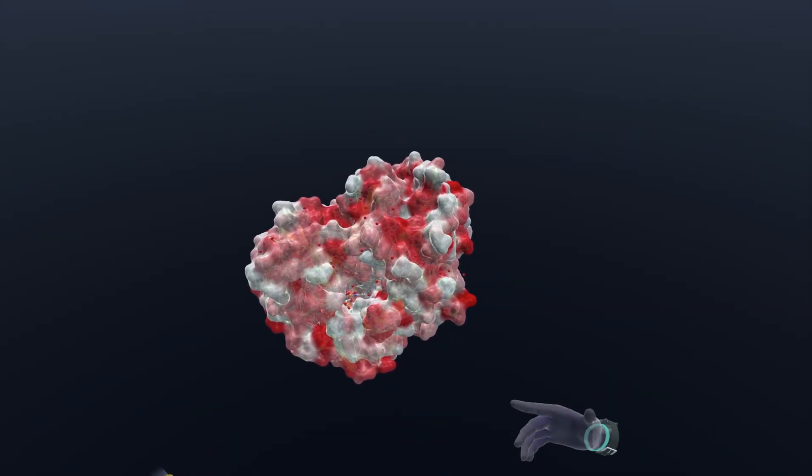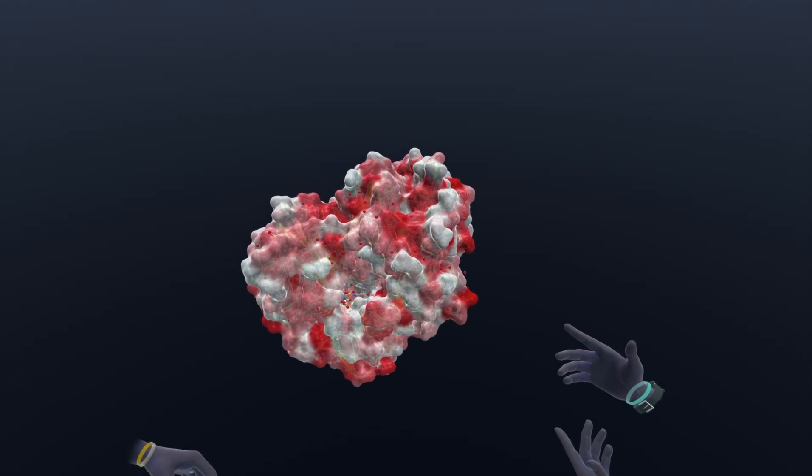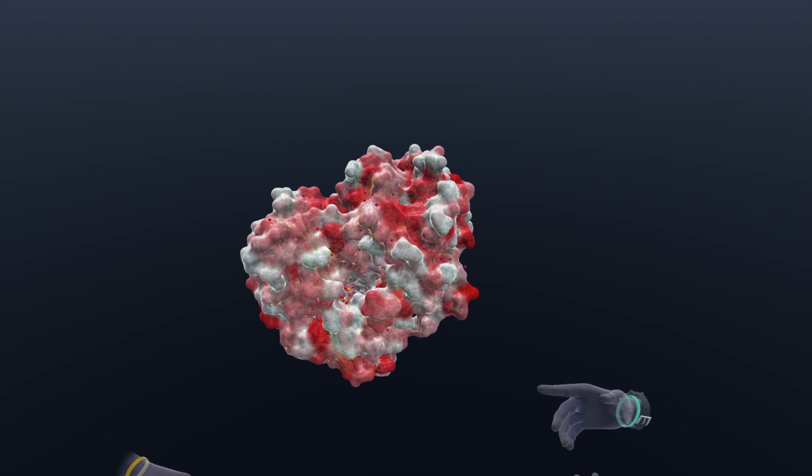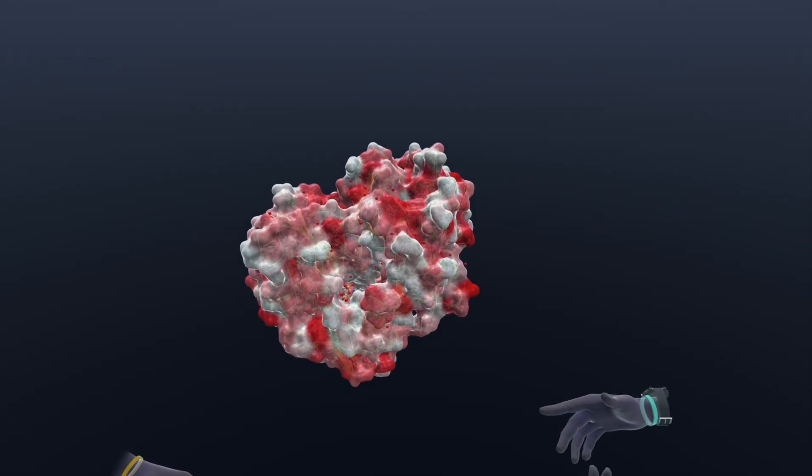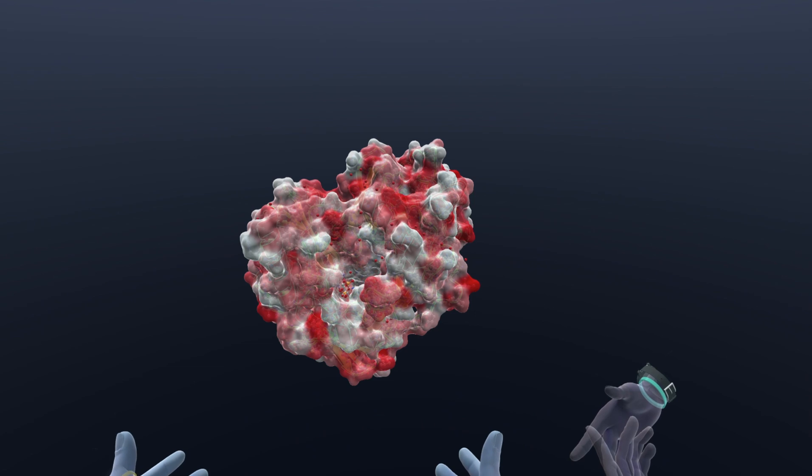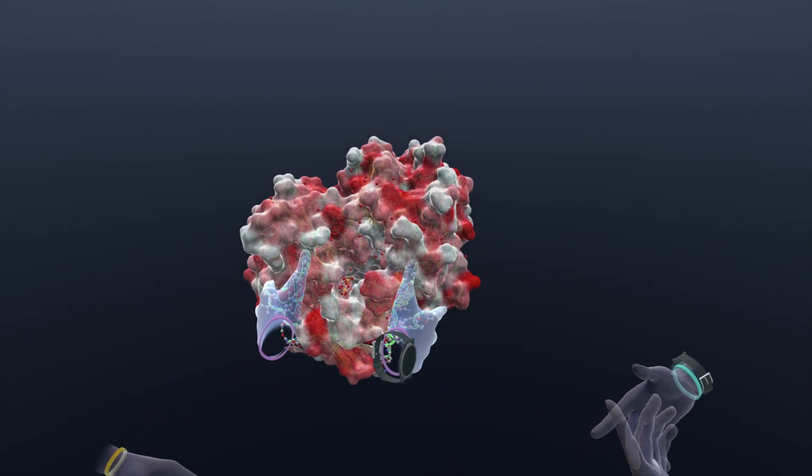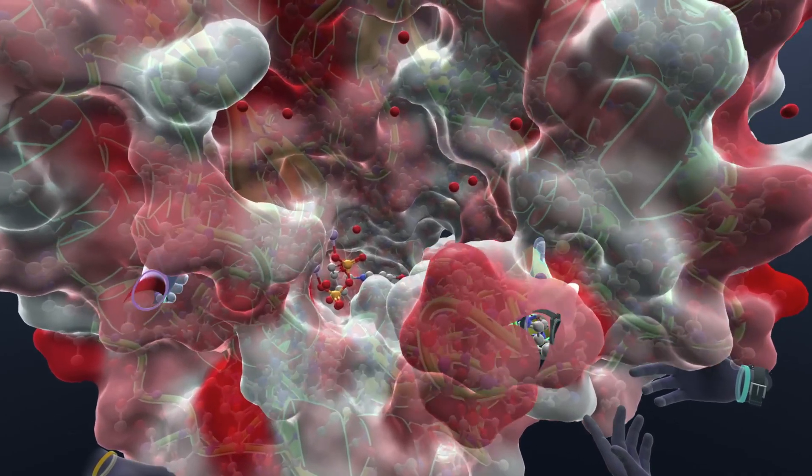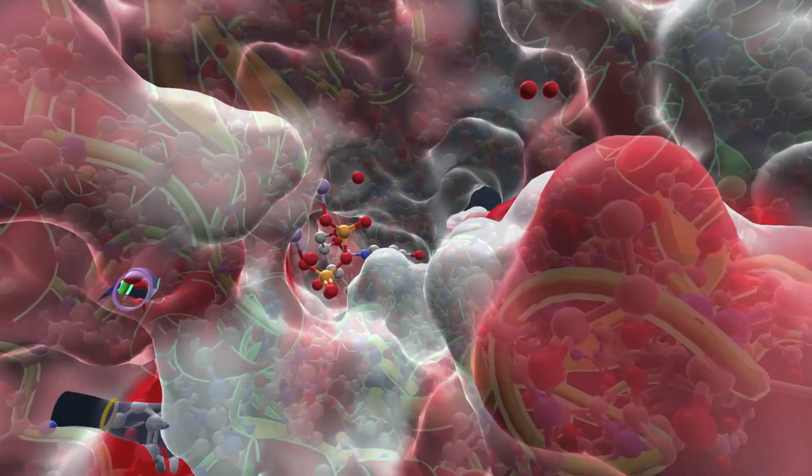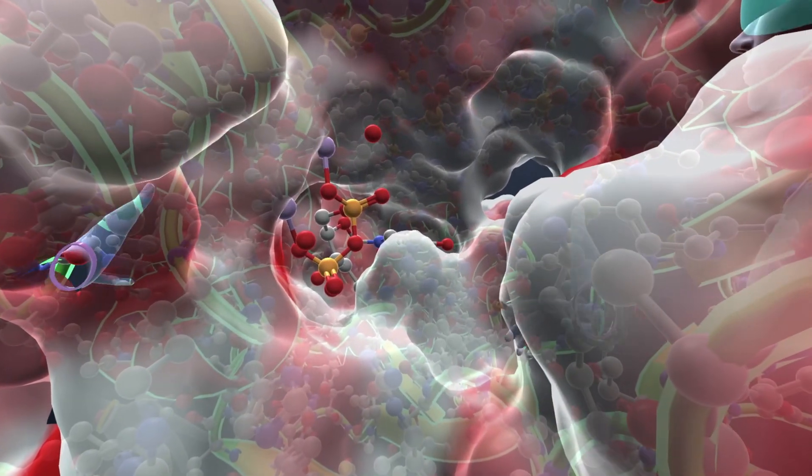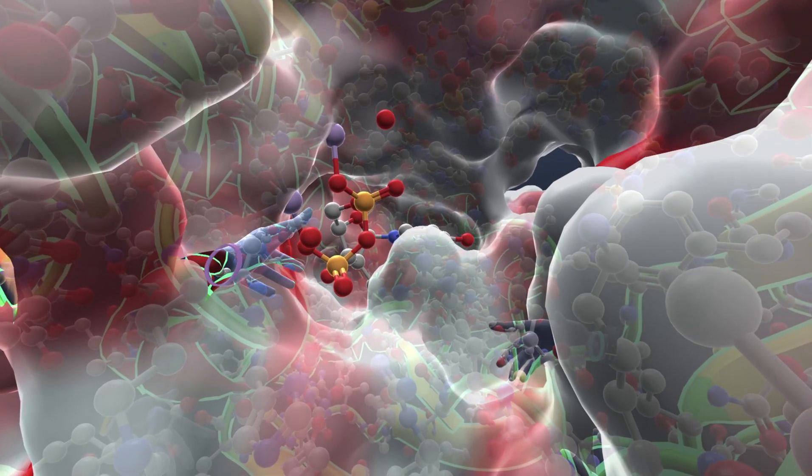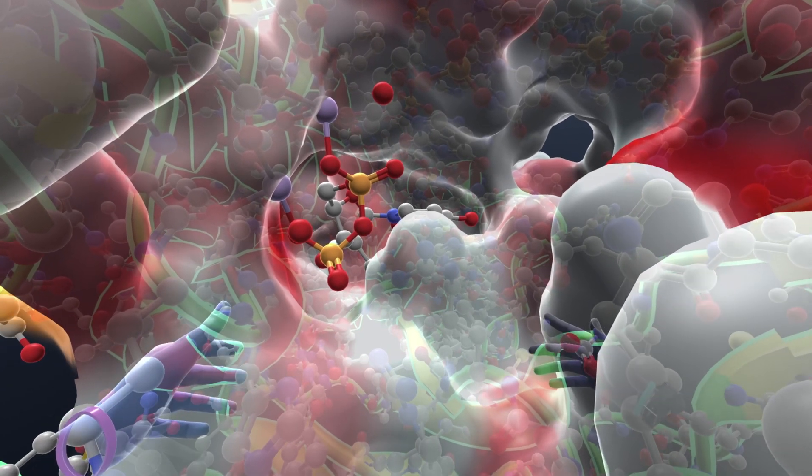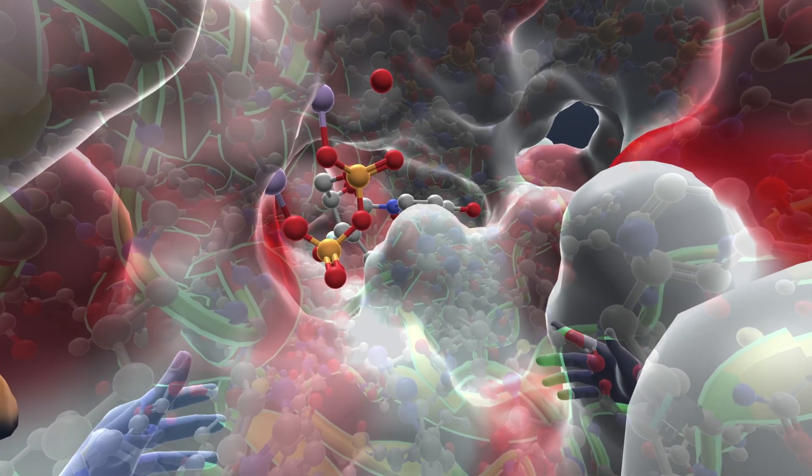Now we're going to look at Sofosbuvir or Sovaldi. This is a drug that is saving lives in combination with other drugs. This was discovered by a group called Pharmasset but then brought to market by Gilead quite famously. This is a nucleotide analog that actually fits in the palm site way down in there - this is where the enzyme does its business. This molecule basically tricks the enzyme.